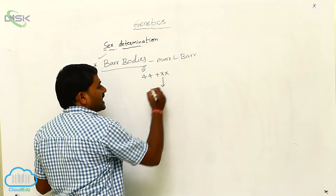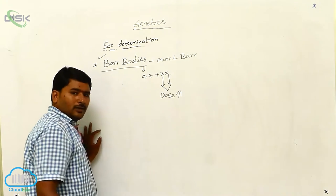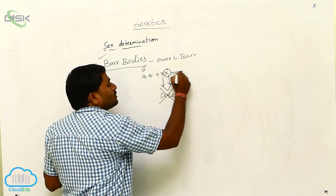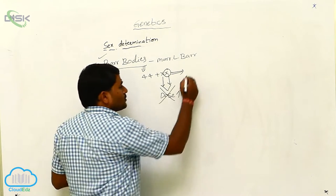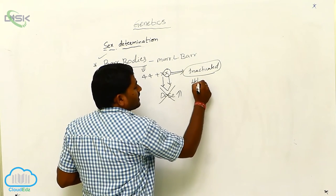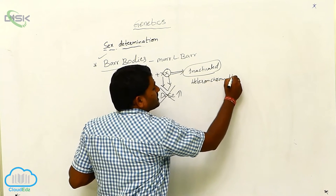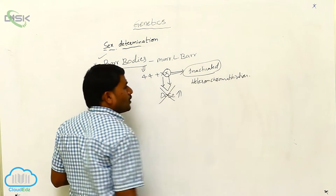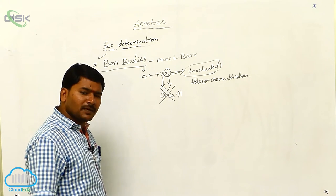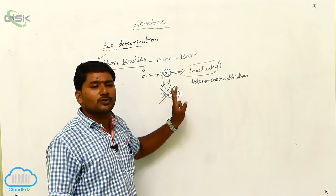If both X chromosomes express their characters, the dose will be increased. So in order to stop this, one of the two X chromosomes becomes inactivated by the process of heterochromatinization. This is called dosage compensation, which is achieved by the inactivation of one of the two X chromosomes in females.